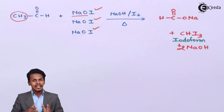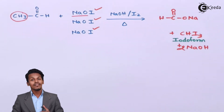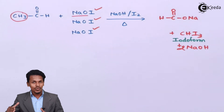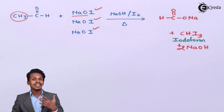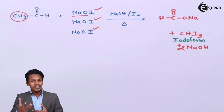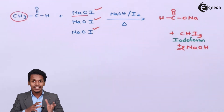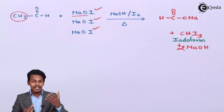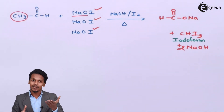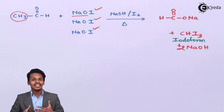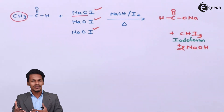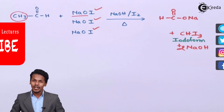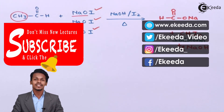What is the significance of the haloform reaction? If we have a ketone which consists of a methyl group attached to C double bond O, performing this reaction will produce iodoform, which is a yellow precipitate. If that positive test appears, we can easily understand that the compound or ketone being tested consists of a methyl group attached to C double bond O. This is how we can distinguish between other ketones and a specific ketone with a methyl group. Similarly, we can also differentiate aldehydes — specifically acetaldehyde — using the same test. Thank you friends for watching.